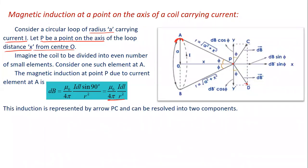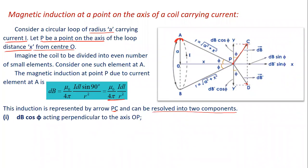This magnetic induction is represented by an arrow at point PC. It is resolved into two components: dB·cosφ and dB·sinφ.